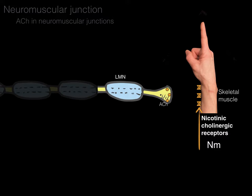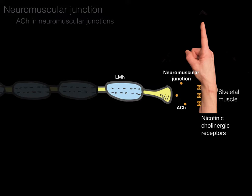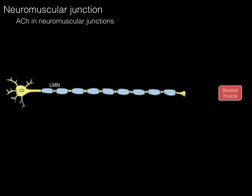In the lower motor neuron, acetylcholine is the neurotransmitter, which binds to nicotinic cholinergic receptors on all skeletal muscles — Nm, big N for nicotinic, little m for muscle. An action potential goes down the lower motor neuron, causes release of acetylcholine at the neuromuscular junction synapse, and acetylcholine binds to the nicotinic cholinergic receptor, resulting in muscle contraction. Diseases can affect the lower motor neuron, acetylcholine, or the receptor.